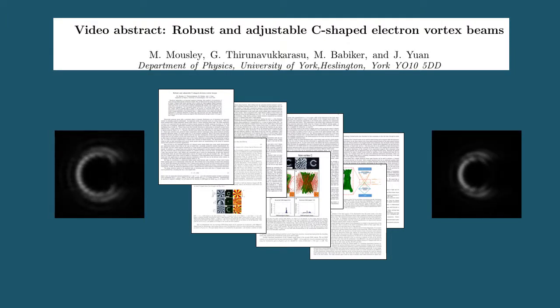Our paper discusses a newly designed and produced C-shaped electron vortex beam, which contains orbital angular momentum in free space and is related to fractional vortex states.